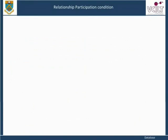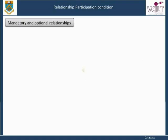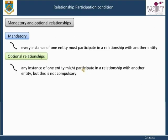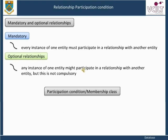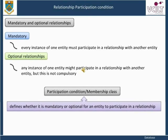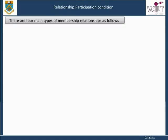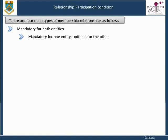We can extend the entity relationship model by declaring that some relationships are mandatory whereas others are optional. In a mandatory relationship, every instance of one entity must participate in a relationship with another entity. In an optional relationship, any instance of one entity might participate in a relationship with another entity, but this is not compulsory. The participation condition, also known as the membership class, defines whether it is mandatory or optional for an entity to participate in a relationship. As there are two kinds of participation condition — mandatory and optional — and most entities are involved in binary relationships, there are four main types of membership relationships: mandatory for both entities; mandatory for one, optional for the other; optional for one, mandatory for the other; and optional for both entities.